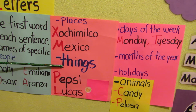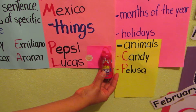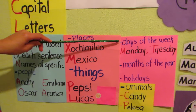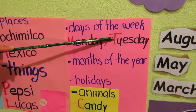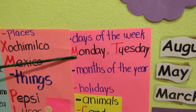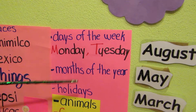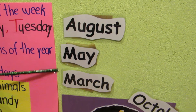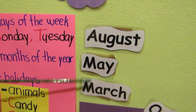Things, for example, Pepsi soda or Lucas candy — delicious. Days of the week, Monday, Tuesday, as you see, begin with capital letters. Months of the year, for example, August, May, and March, as you see, begin with capital letters.